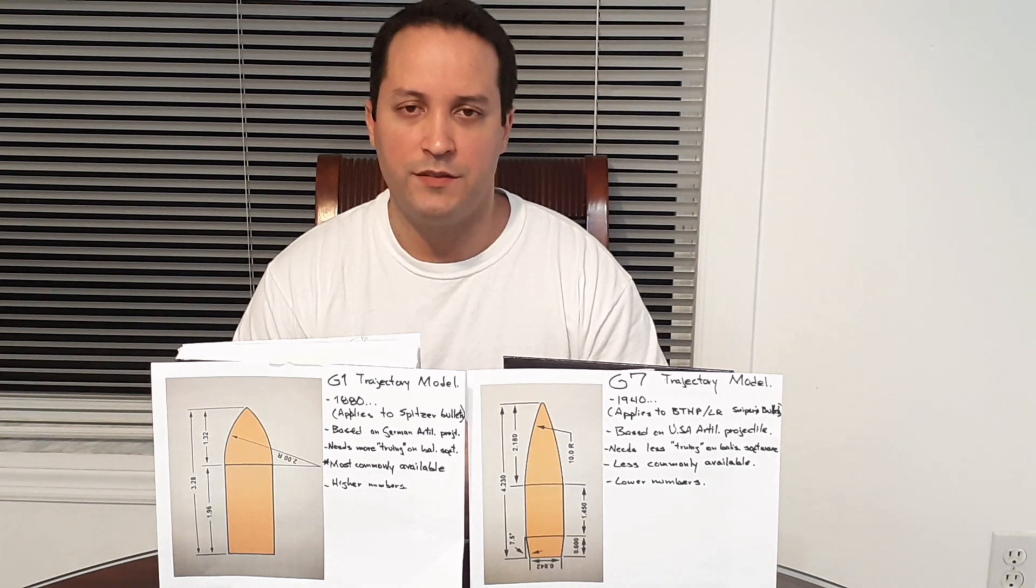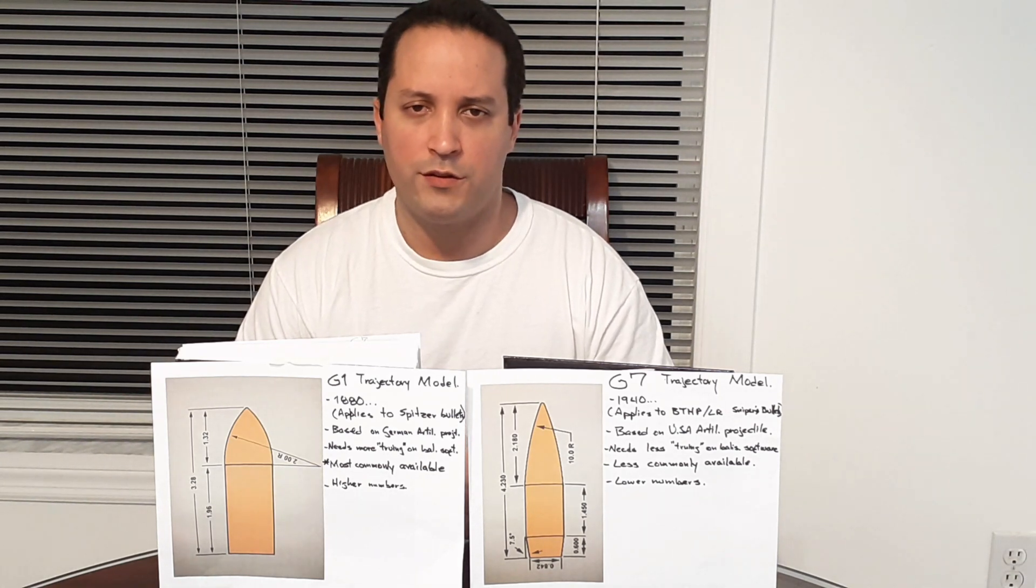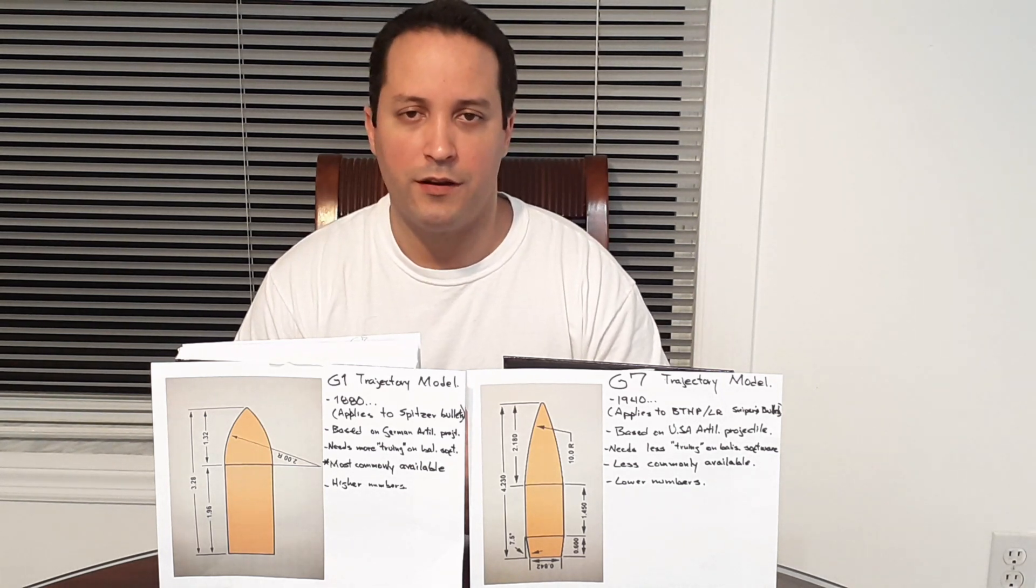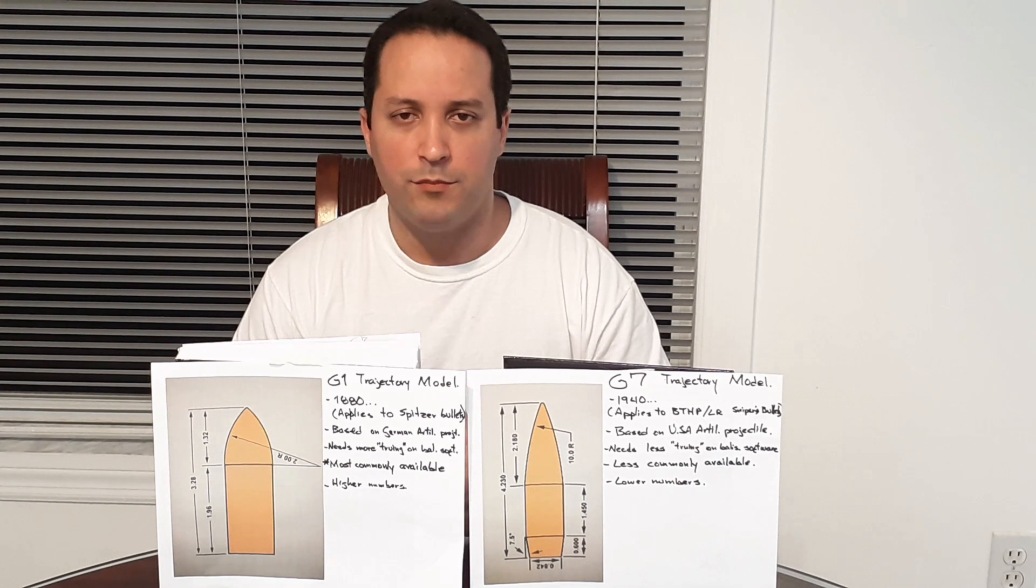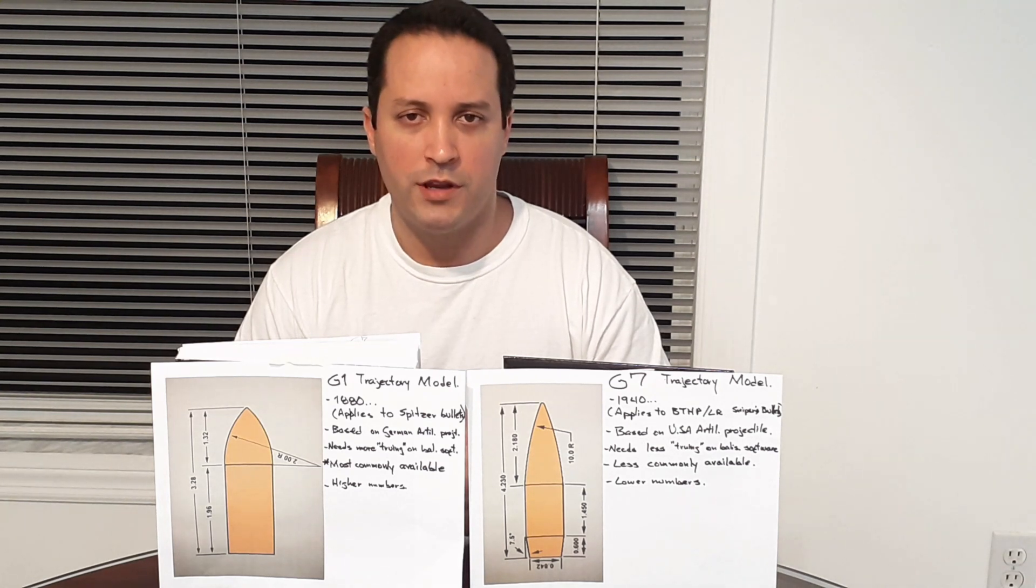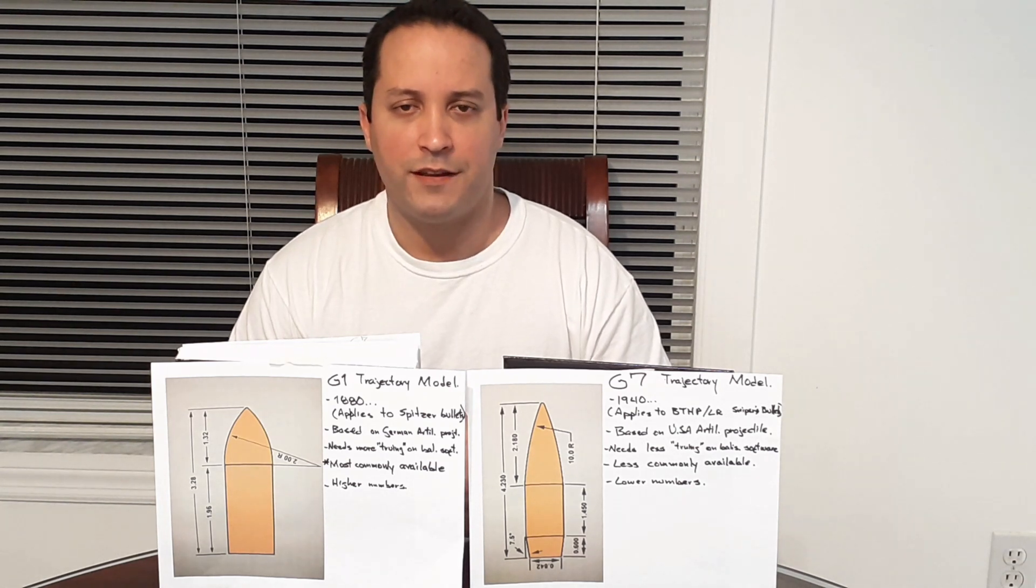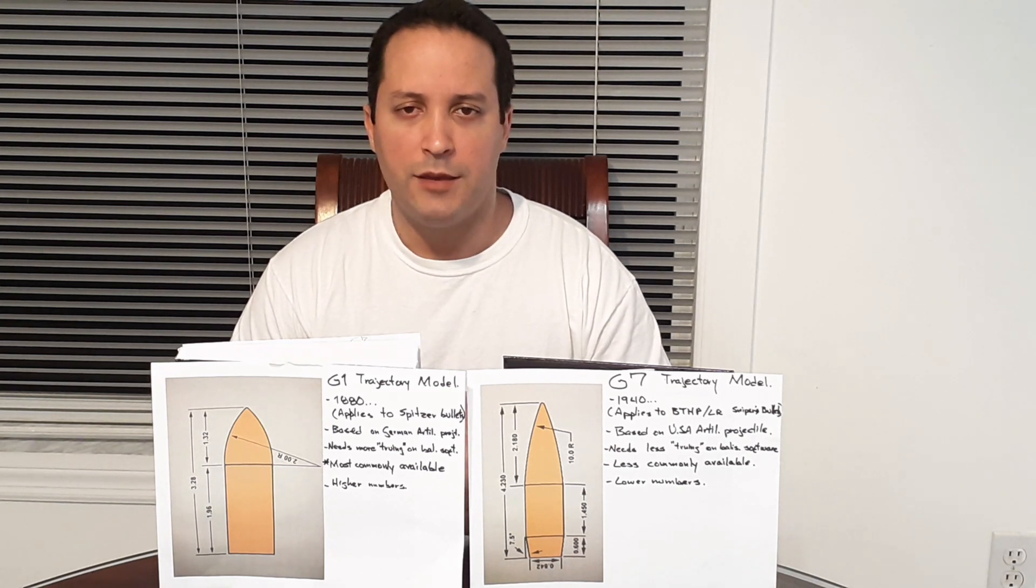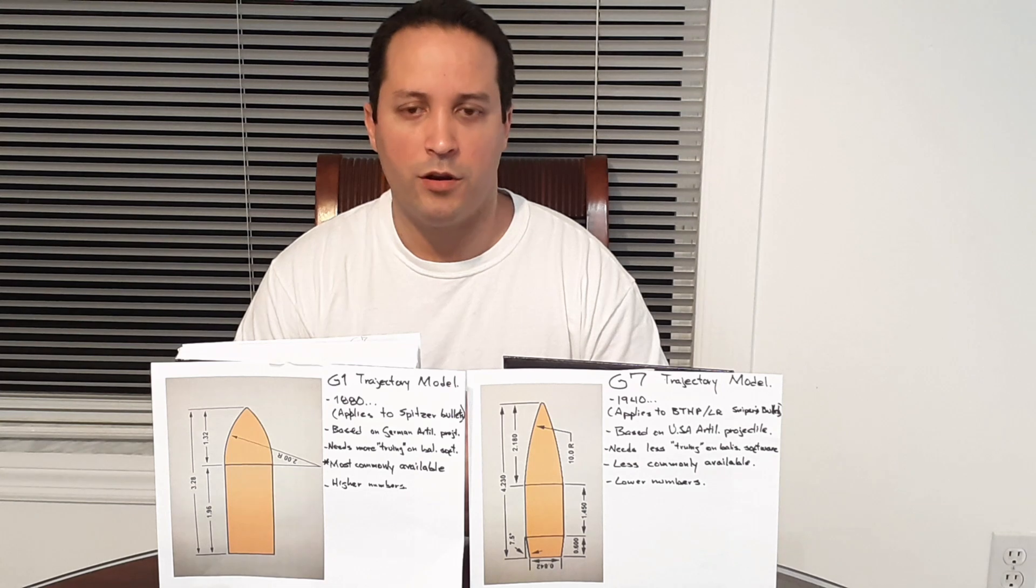When we talk about ballistic coefficient, it's represented by the BC on the box. Generally speaking, the higher the number, the better the quality of the bullets. It means a flatter trajectory, less affected by crosswind, preserves muzzle velocity at extended range, and preserves the stocking power upon impact.